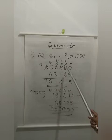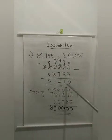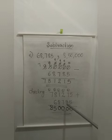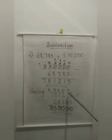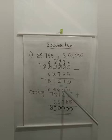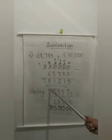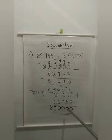Now how will you check our subtraction? Adding the difference with the subtrahend: 7,81,215 plus 68,785. Adding 5 plus 5 is 10 — write 0, 1 carry over. 1 plus 8 plus carry 1 is 10 — write 0, 1 carry over. 2 plus 7 plus 1 is 10 — write 0, 1 carry over. 1 plus 8 plus 1 is 10 — write 0, 1 carry over. 8 plus 6 is 14, plus 1 is 15 — write 5, 1 carry over. 7 plus 1 is 8. So we got the minuend: 8,50,000.